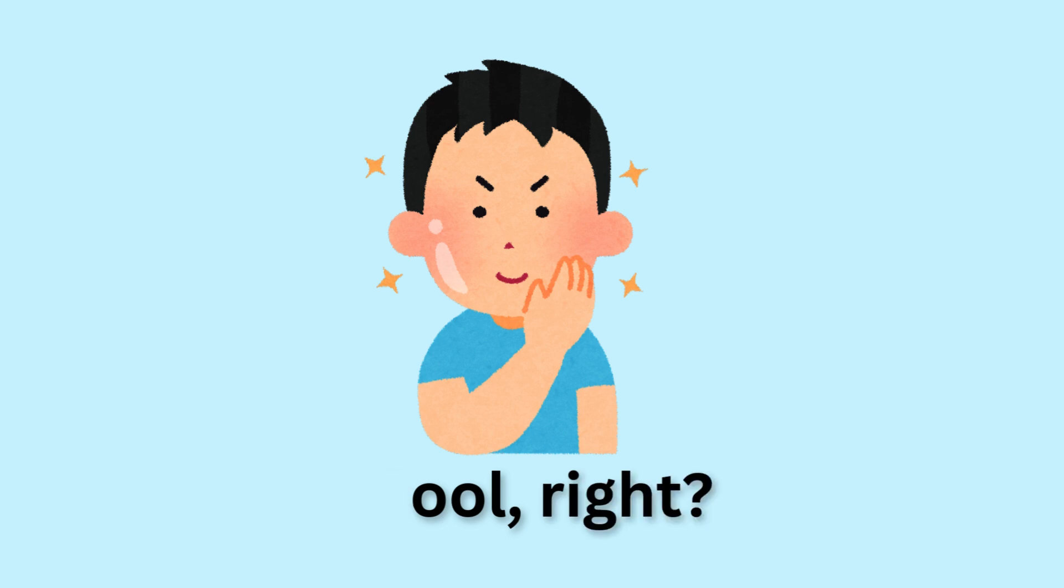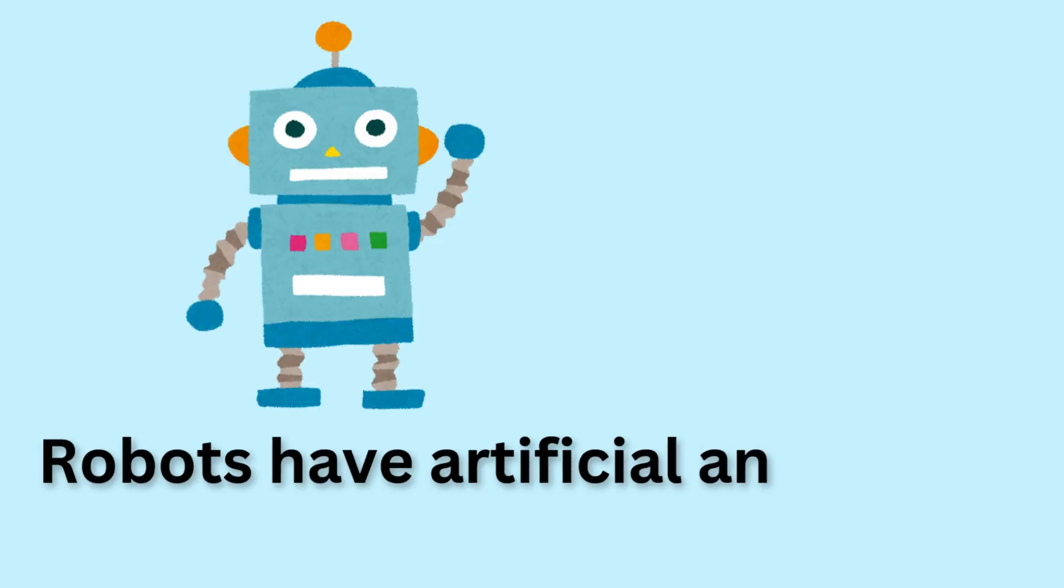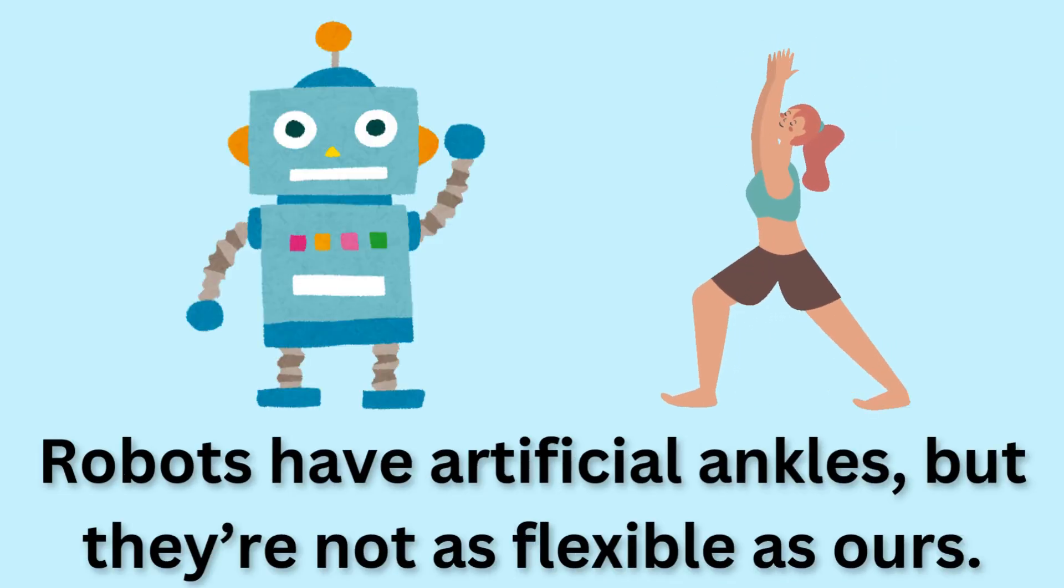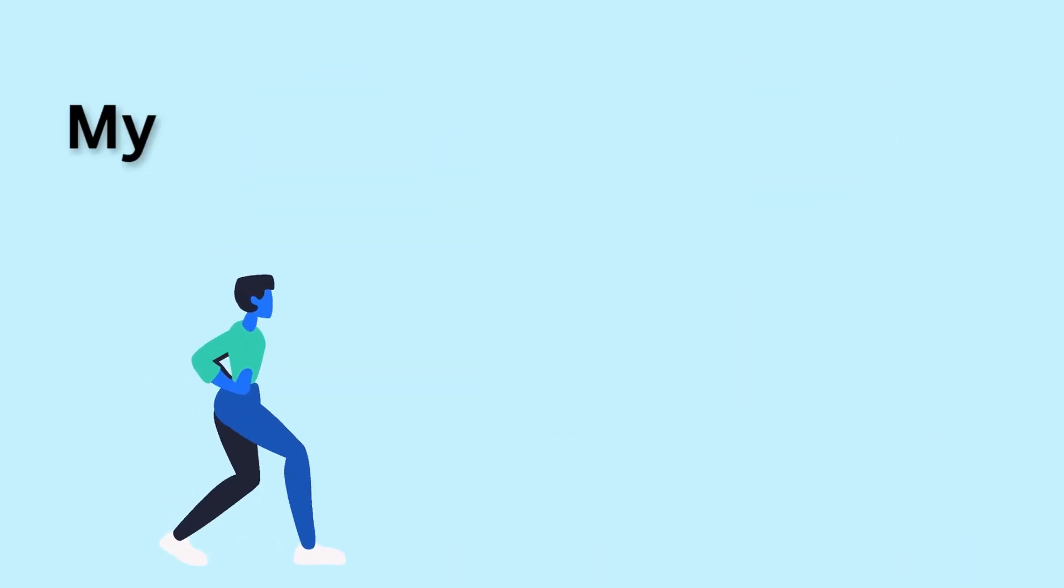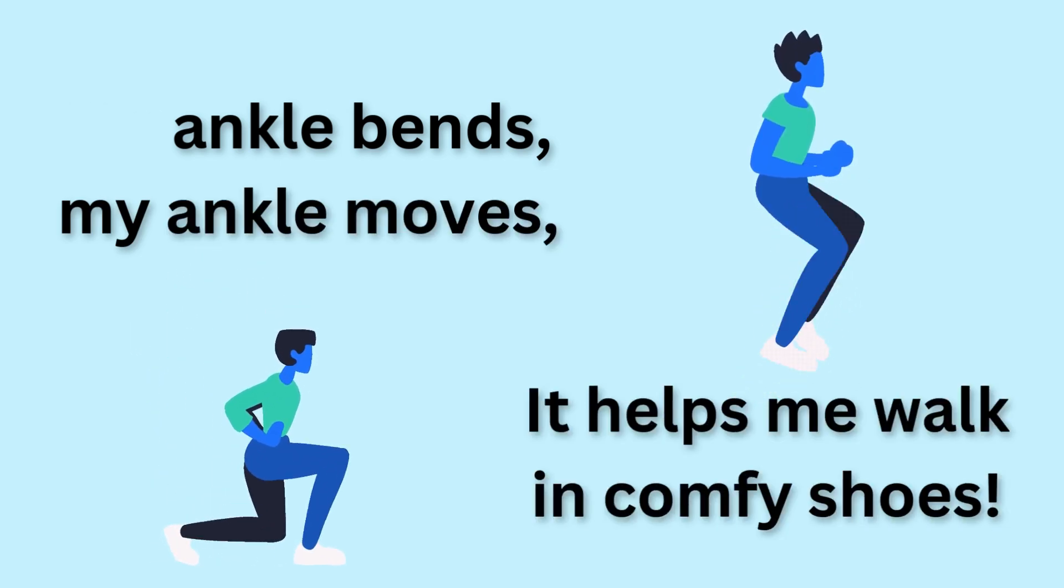Cool, right? Sam tied his shoelaces tightly around his ankle before running. Did you know robots have artificial ankles, but they're not as flexible as ours? My ankle bends, my ankle moves, it helps me walk in comfy shoes!